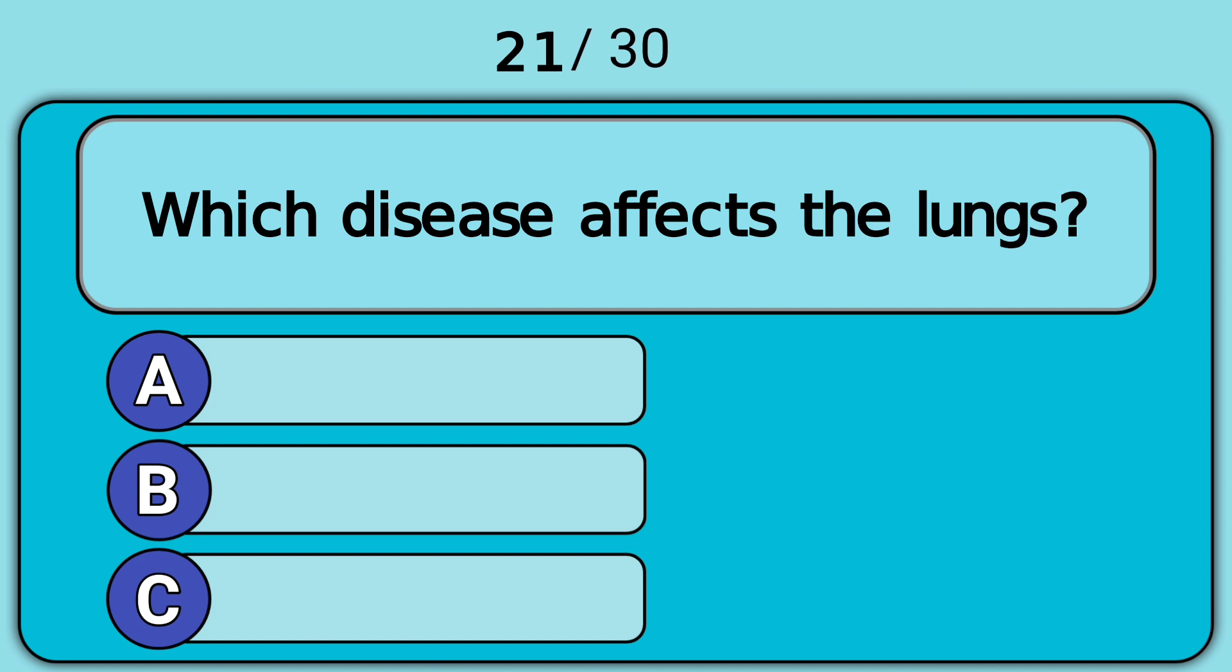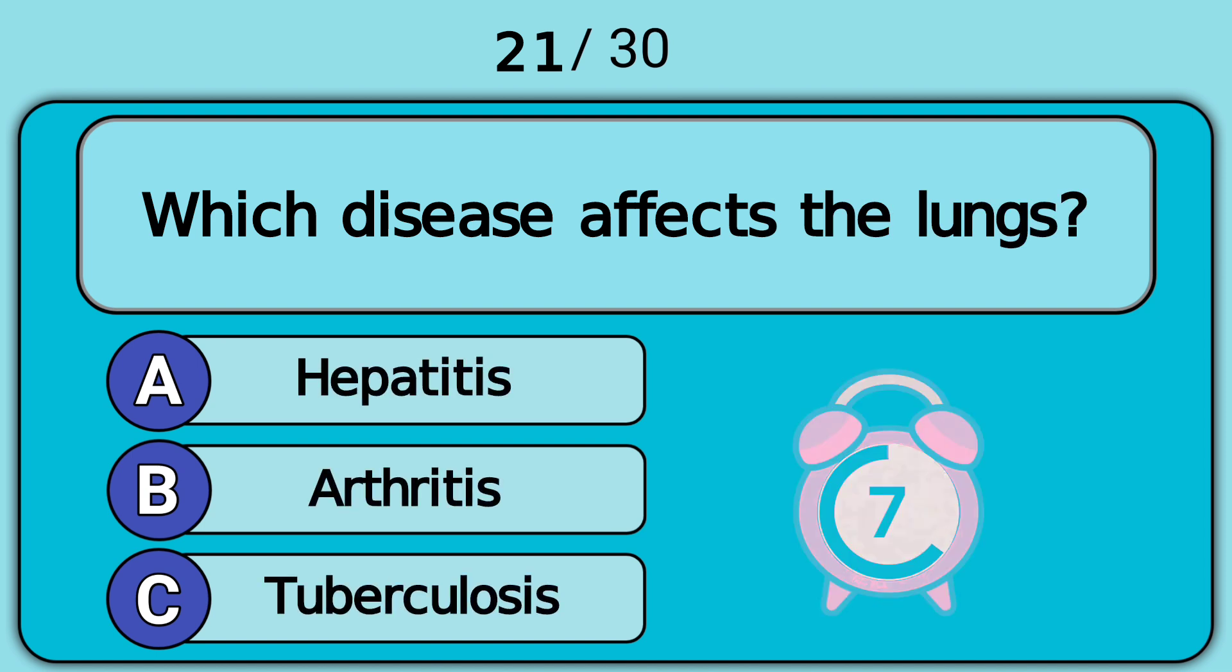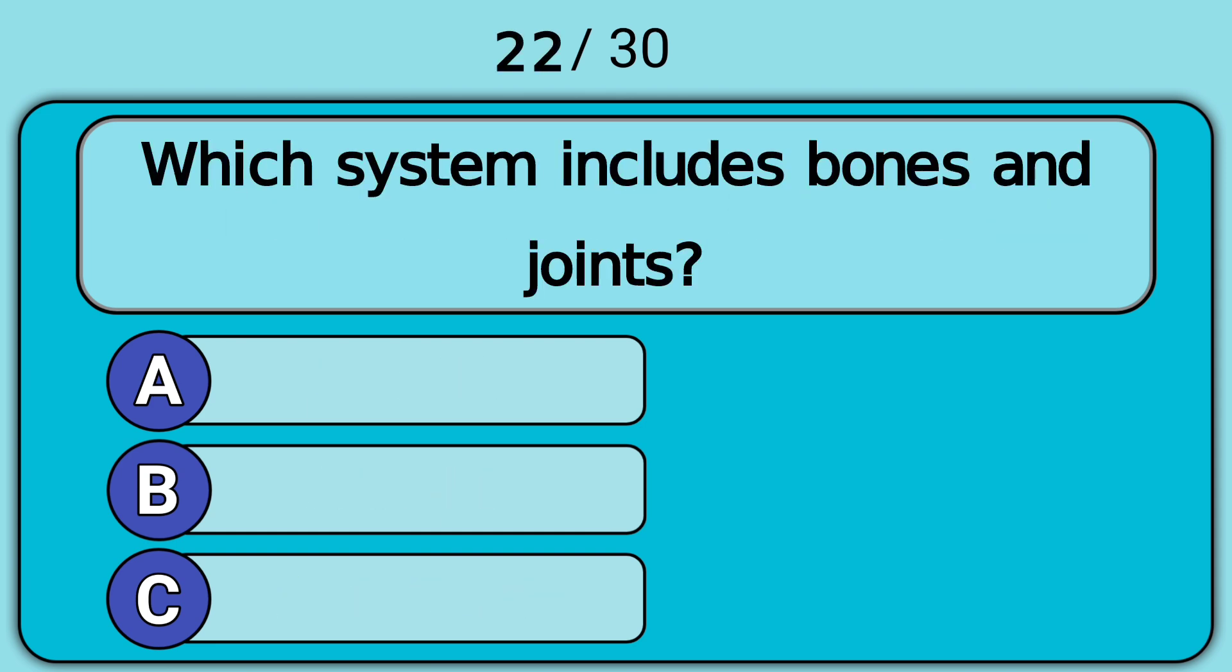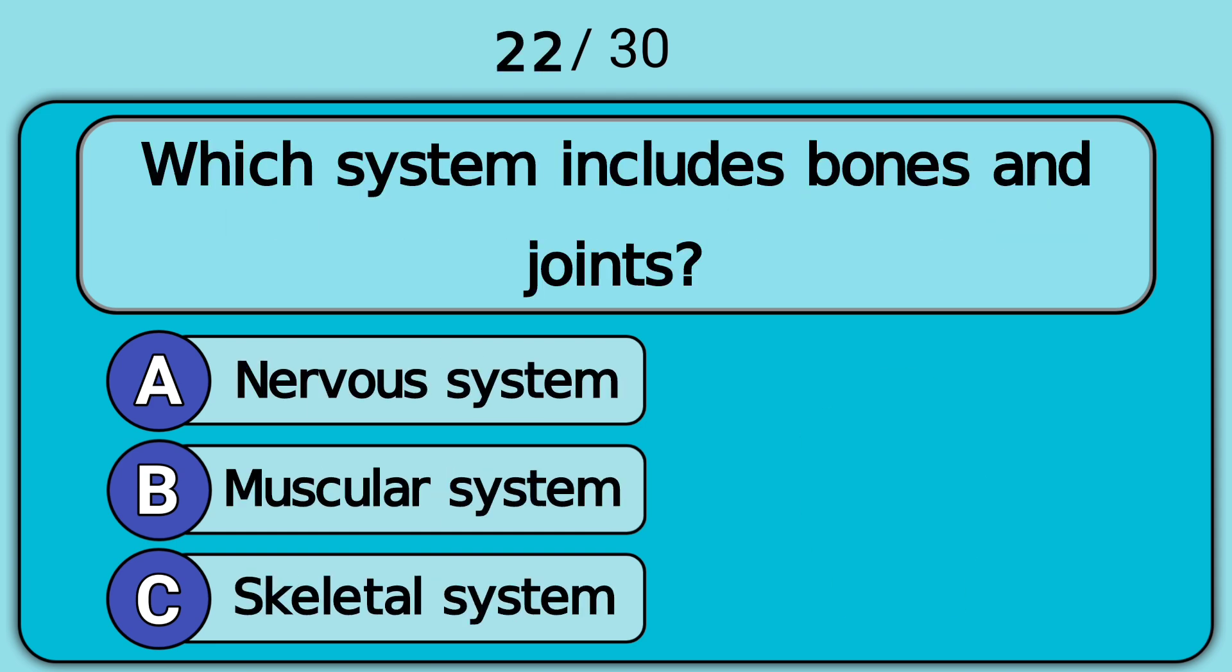Which disease affects the lungs? Answer C. Tuberculosis. Which system includes bones and joints? Answer C. Skeletal system.